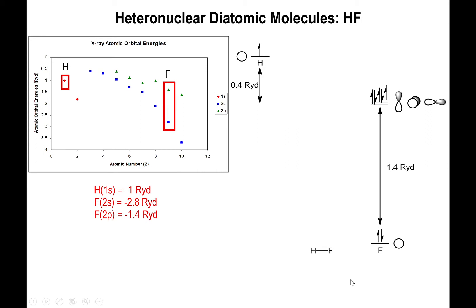In the case of a molecule like hydrogen fluoride, we can see the energies in Rydbergs for hydrogen and fluorine. The p orbitals, depicted by the green triangles, are of closer energy to the s orbital of hydrogen. In molecular orbital theory, orbitals of the same symmetry can combine with each other to give bonding orbitals and anti-bonding orbitals.